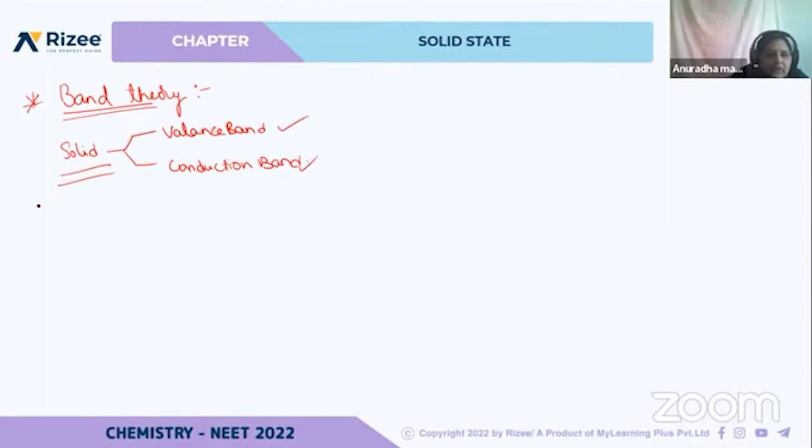For example, if we take silicon, it has an atomic number of 14. We write the electronic configuration: 1s2, 2s2, 2p6, 3s2, 3p2, and along with this, 3d is also there.